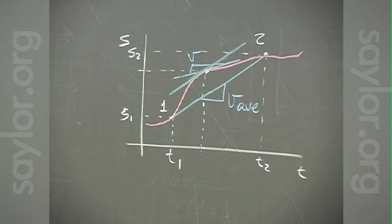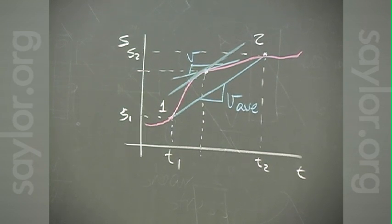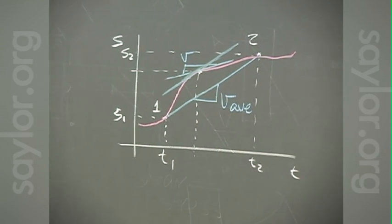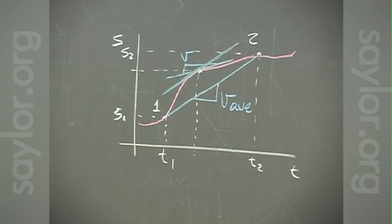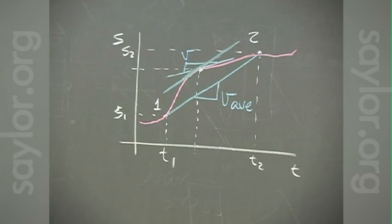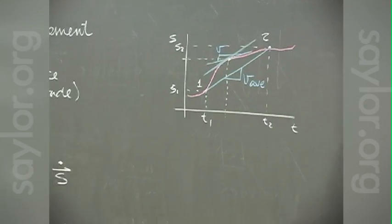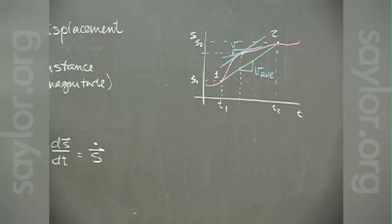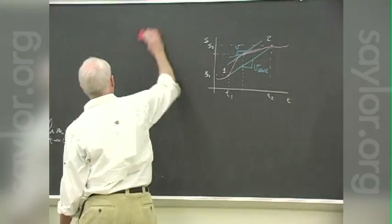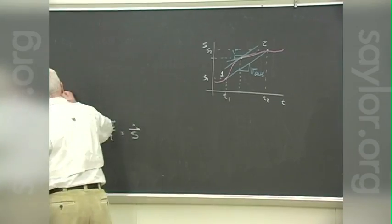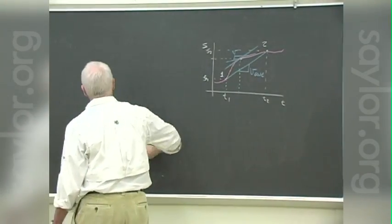It didn't matter what your speed was at any one point: if your average between the two points exceeded the speed limit, the theorem guaranteed that somewhere in between you were indeed speeding.